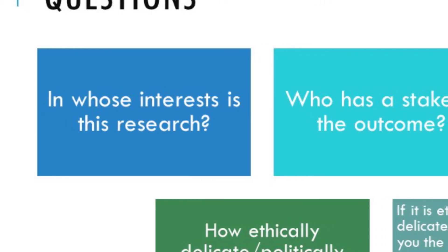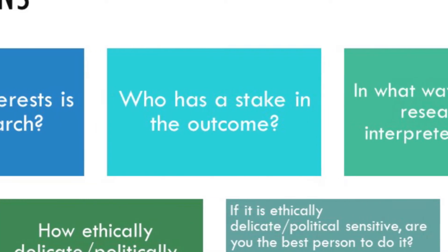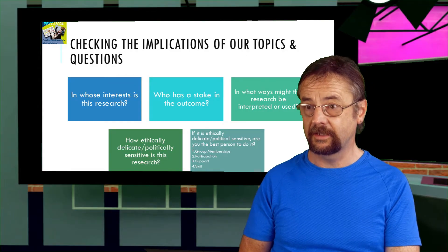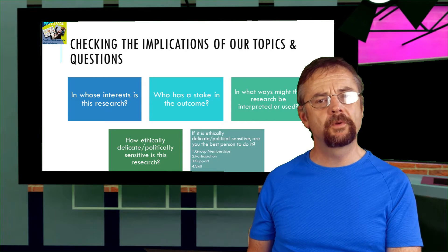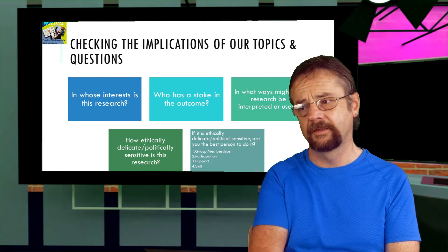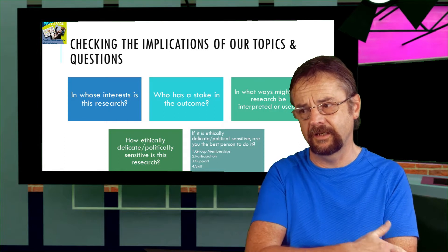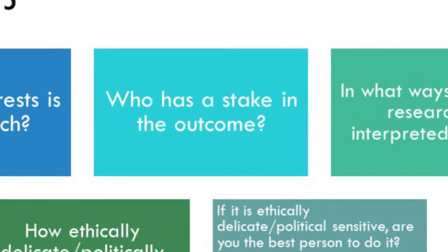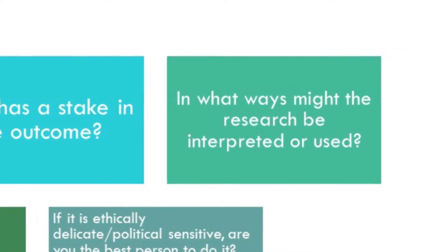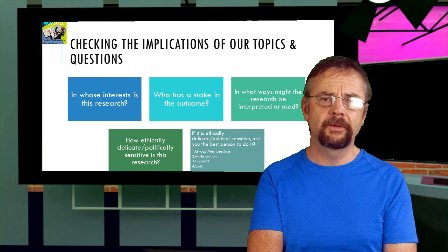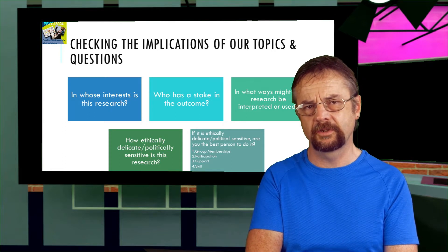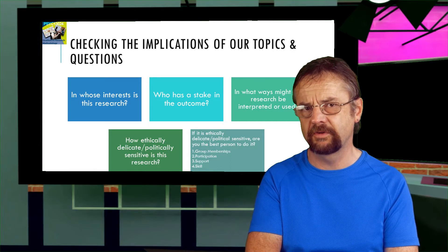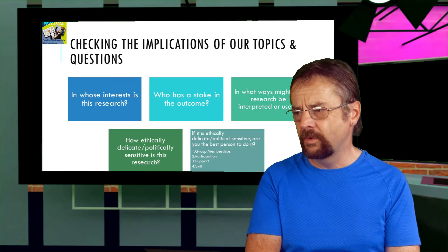You can also ask who are the stakeholders in this project — this might be the people who are funding the research, but also those people who are going to be impacted by the findings. Have you fully considered their interests and needs, and how those needs are going to be served by your research? You should also ask how the research could be interpreted and used — could it be used to harm others? In the case of politically or ethically sensitive research on a disempowered marginalized community, you particularly have to think about whether this research could end up damaging them.